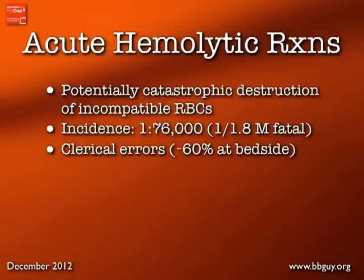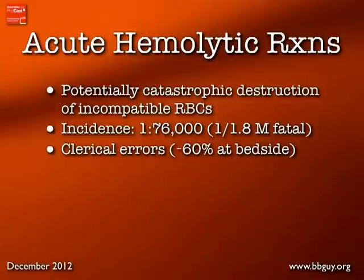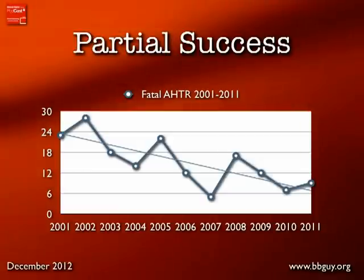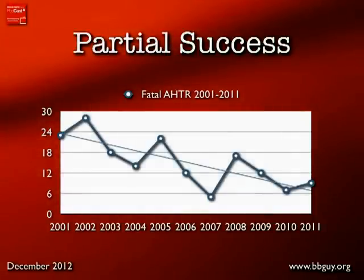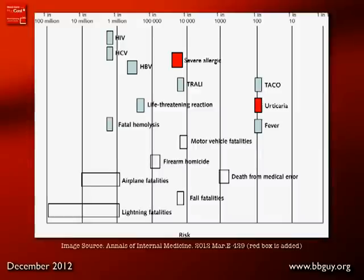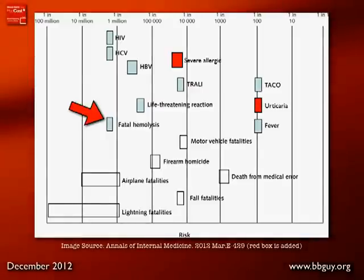They have an incidence of about 1 in 76,000 transfusions, which is somewhat scary, but in truth only about 1 in 1.8 million transfusions actually results in a fatal acute hemolytic reaction. Most happen as a result of clerical errors — someone drawing the wrong person or writing the wrong name, either at the bedside (60%) or in the blood bank (40%). The trend of fatal reactions reported to the FDA since 2001 is definitively down. To put it in perspective, it's about the same risk as getting HIV or hepatitis C from a transfusion, or dying in a plane crash.